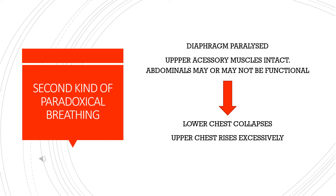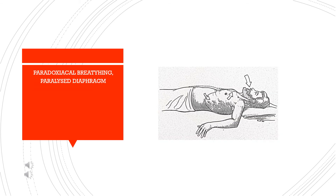The upper accessory muscles expand the rib cage primarily in the superior plane. In the second kind of paradoxical breathing, because of the paralyzed diaphragm, the lower chest collapses while the upper chest rises excessively. Anterior and lateral expansion may also occur if the intercostal and pectoralis muscles are functional.